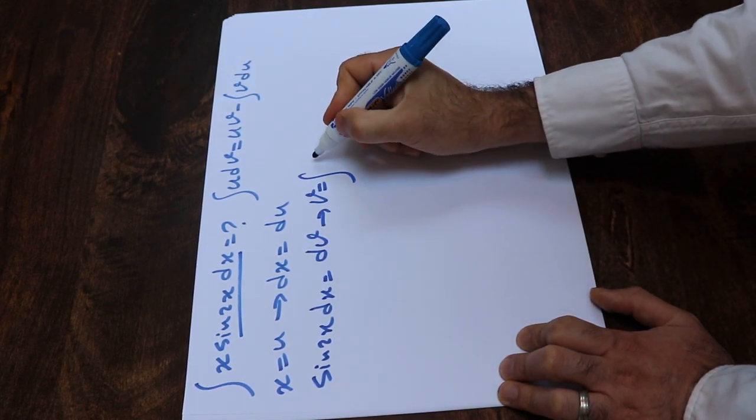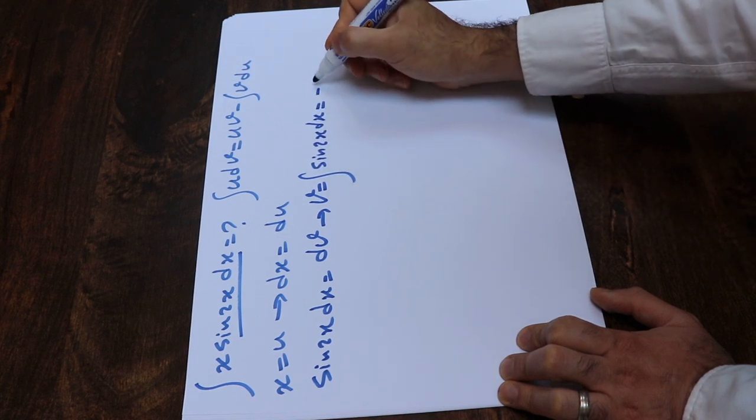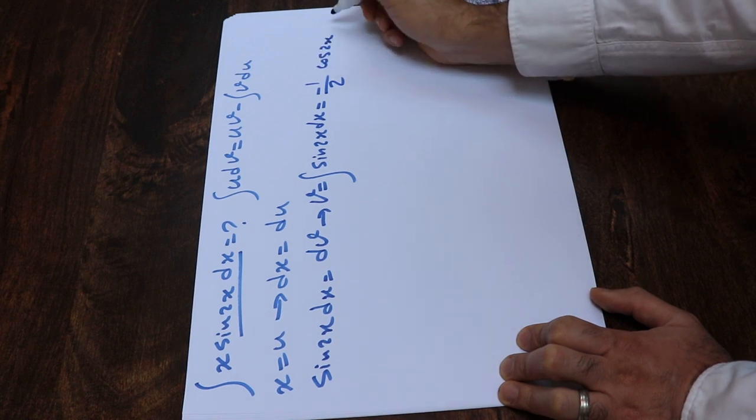Therefore v will be equal to integral of sine 2x dx which will be equal to minus 1 divided by 2 cosine 2x.